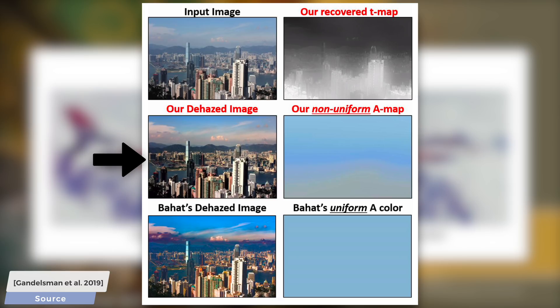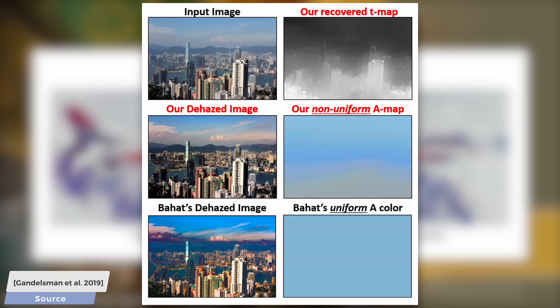If you spend a tiny bit of time looking out the window on a hazy day, you will immediately see that this is immensely difficult, mostly because the amount of haze that we see is non-uniform along the landscape. The AI has to detect and remove just the right amount of this haze and recover the original colors of the image.